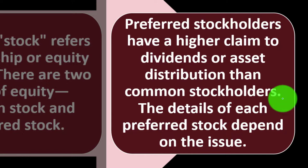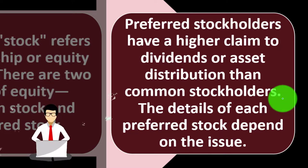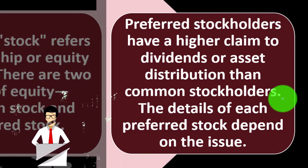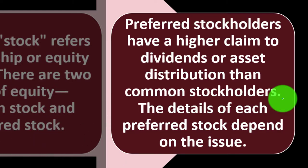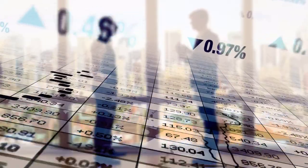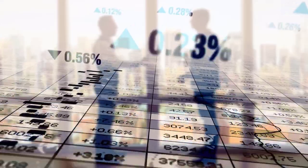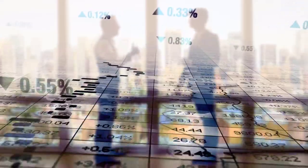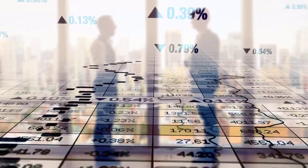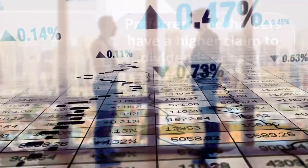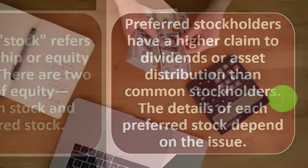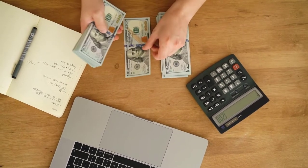Preferred shareholders have a higher claim to dividends or asset distributions than common stockholders. Note that this doesn't necessarily mean preferred stock is better — the name could suggest you'd prefer it over common, but that's not necessarily the case. They're basically just different in nature. The reason it's called preferred is because, like bonds, preferred shareholders have a claim — if a company were liquidated, bondholders must be paid before stockholders.